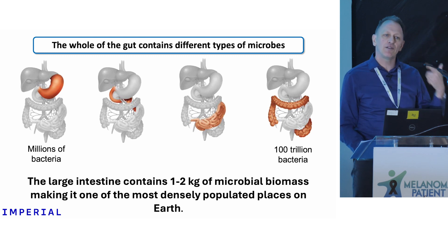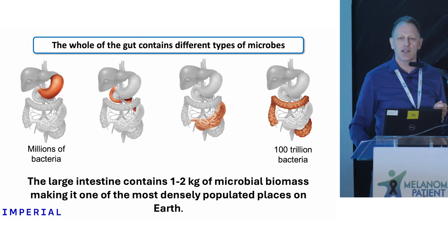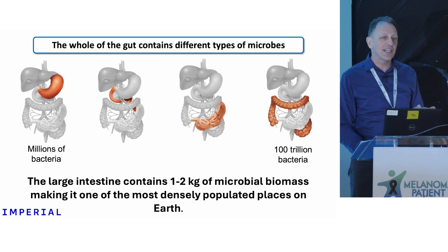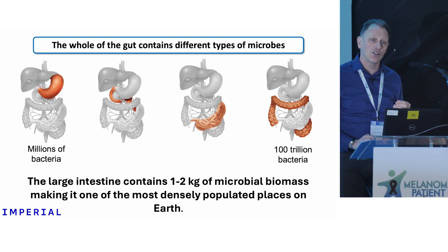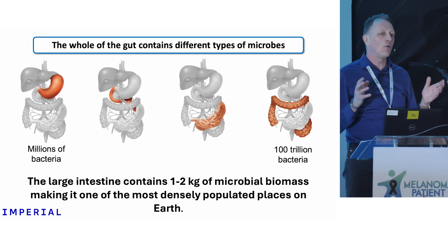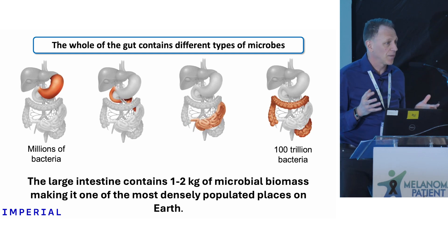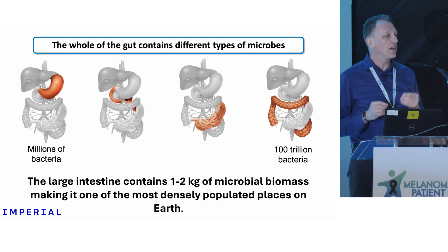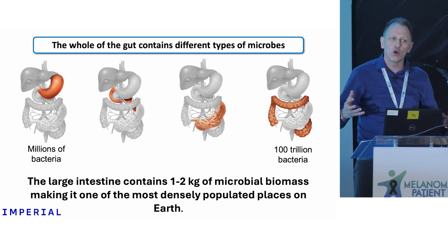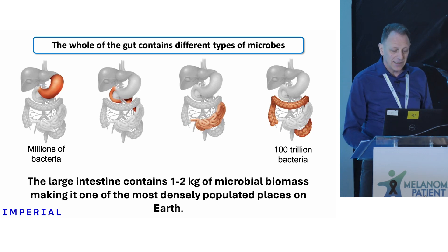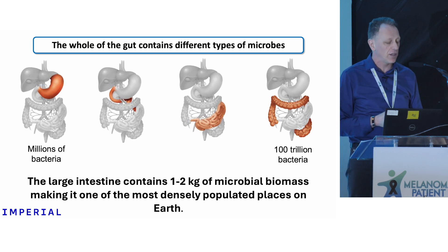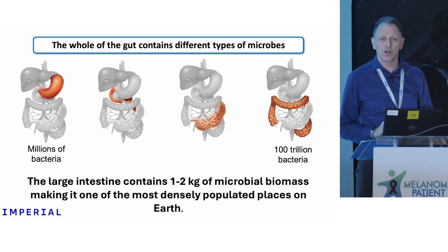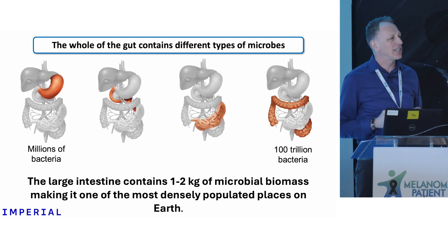Your whole gut starts at your mouth, finishes at your anus, and is fully colonized by bacteria. The stomach is not sterile — people used to say it was because of the acid, but there are millions of bacteria living there. When you get down to the large intestine, we're talking 100 trillion bacteria. To give you a sense of that, your body has about 90 trillion cells — so there are more bacteria than human cells in your body. By weight you're more human, but by number you're more microbial.